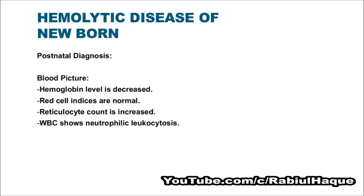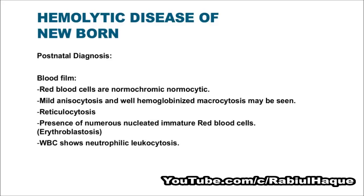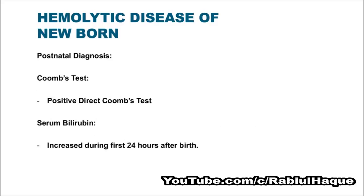Here we are seeing some findings in the lab. The blood picture will include decreased hemoglobin, normal red cell indices, increased reticulocyte count, and neutrophilic leukocytosis. In the blood film, red blood cells are normochromic normocytic; mild anisocytosis and well-hemoglobinized macrocytosis may be seen. There will be reticulocytosis and presence of numerous nucleated erythroid red blood cells called erythroblasts — that's why the disease is also known as erythroblastosis fetalis. The direct Coombs test will be positive and serum bilirubin level will be increased during the first 24 hours after birth.